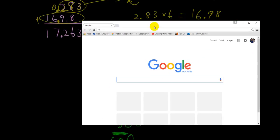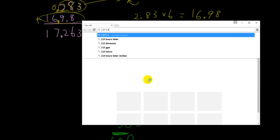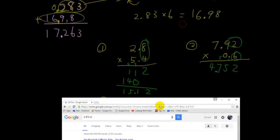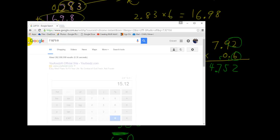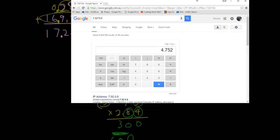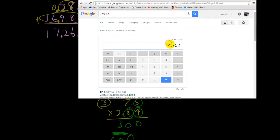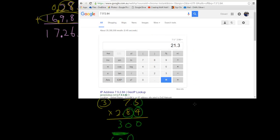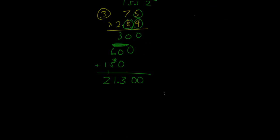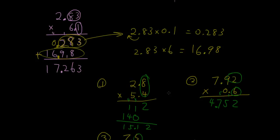So the answer for the first one, 2.8 times 5.4, is 15.12. The next one, 7.92 times 0.6, the answer is 4.752. And 7.5 times 2.84 is 21.3. So that's how you do multiplication with decimal points. Thanks for watching, guys. See you next time.